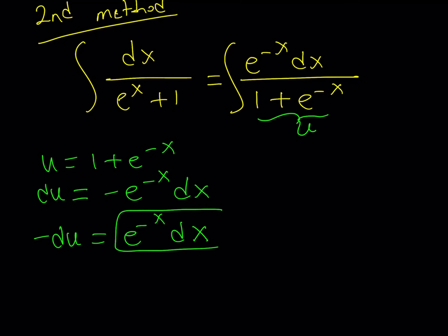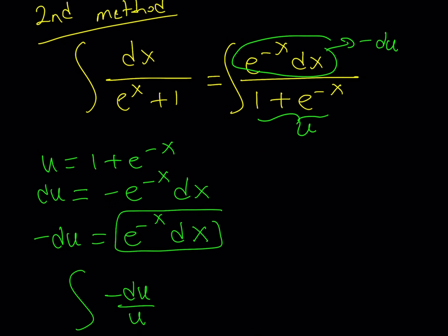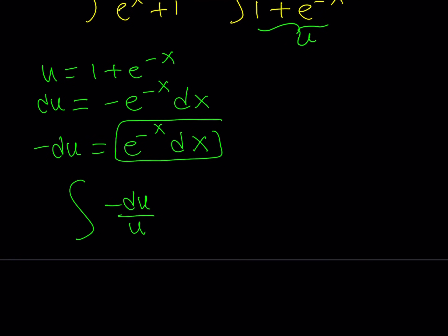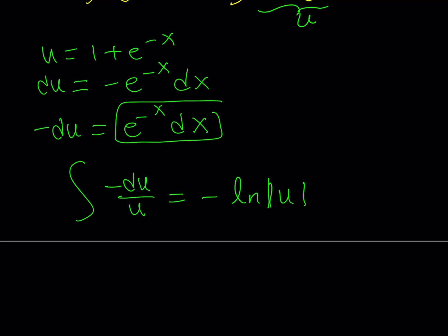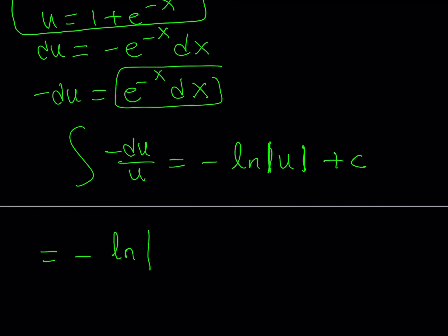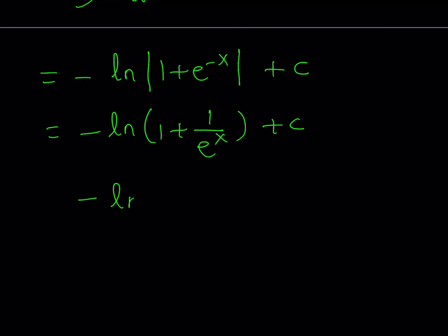I can replace e⁻ˣ dx with negative du. This gives the integral negative du over u — much simpler than before since we don't need partial fractions. The integral of du over u is ln|u|, and with the negative sign we get negative ln|u| plus c. Back-substituting u equals 1 plus e⁻ˣ, we get negative ln(1 plus e⁻ˣ). Since 1 plus e⁻ˣ is always positive we can drop the absolute value. Writing e⁻ˣ as 1 over eˣ and making a common denominator gives negative ln of (eˣ+1) over eˣ, plus c.